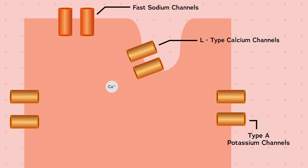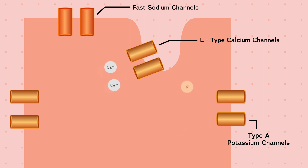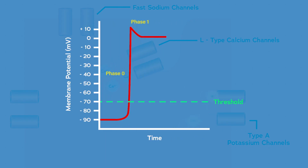When the membrane potential reaches zero millivolts, this becomes a powerful stimulus for L-type calcium channels, and more and more calcium flows into the cell. However, the Type A potassium channels are still open. Since positive potassium charges are leaving and positive calcium charges are entering simultaneously, the membrane potential does not change — it plateaus for about 250 milliseconds. This is known as the plateau phase, or Phase 2 of the action potential.